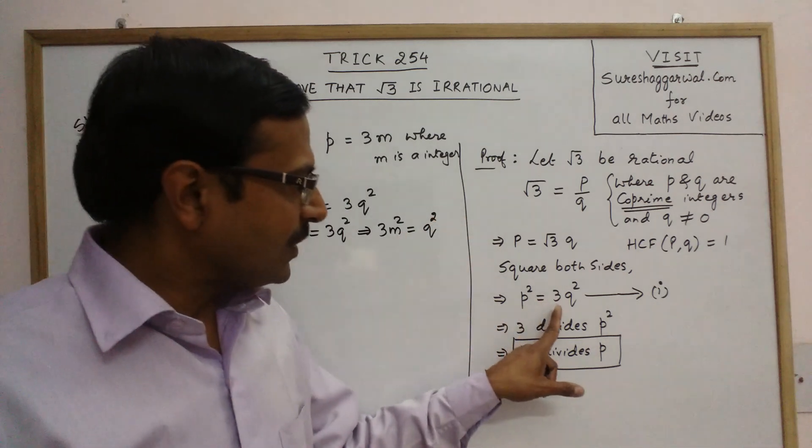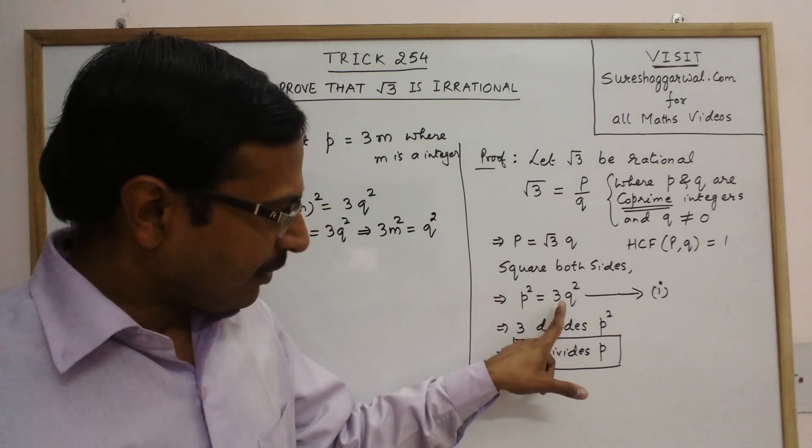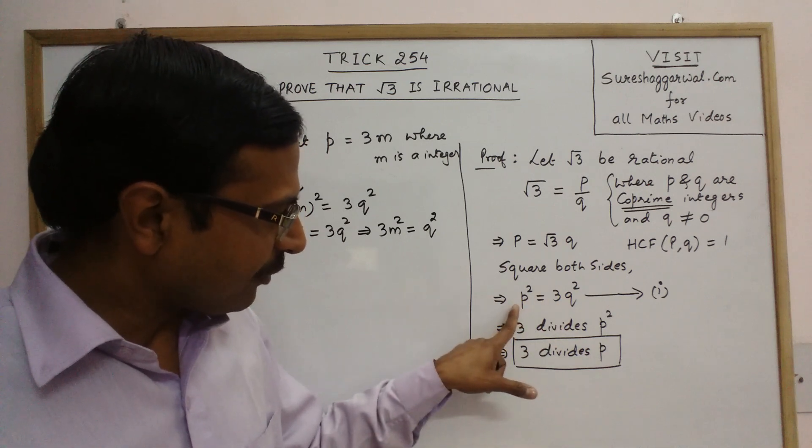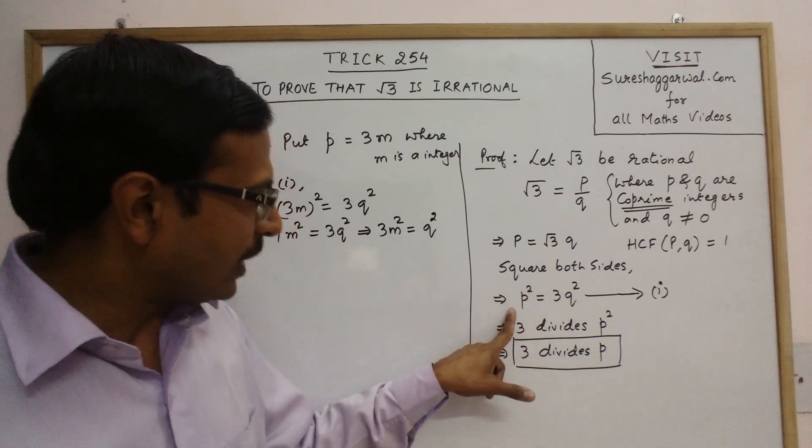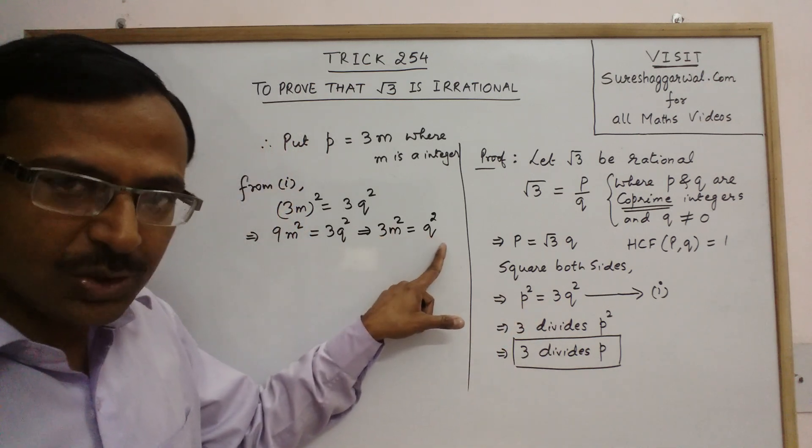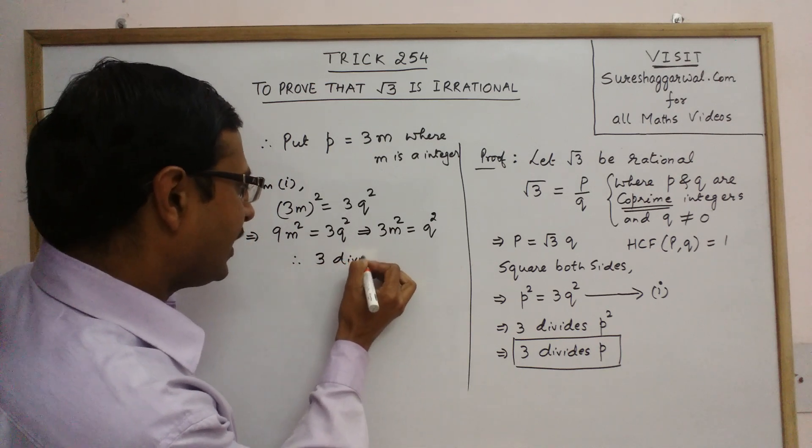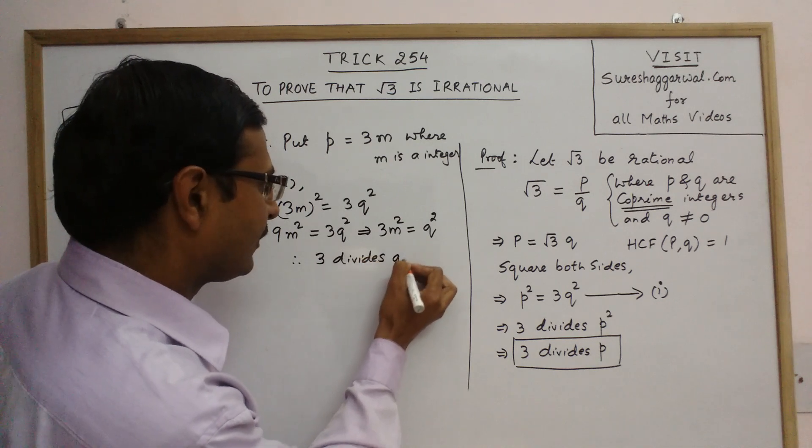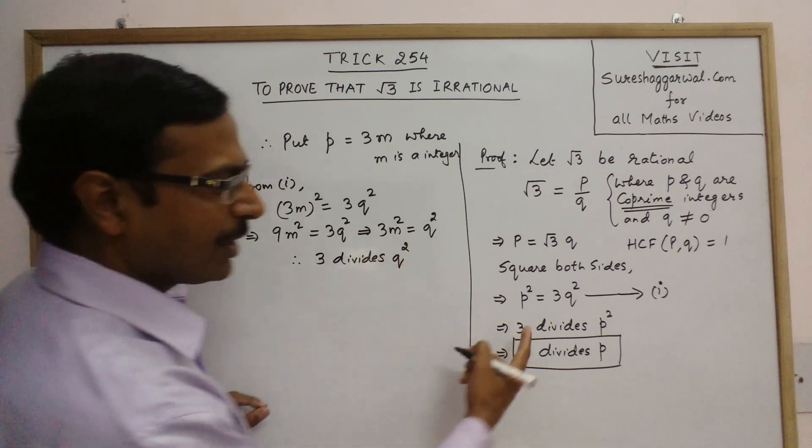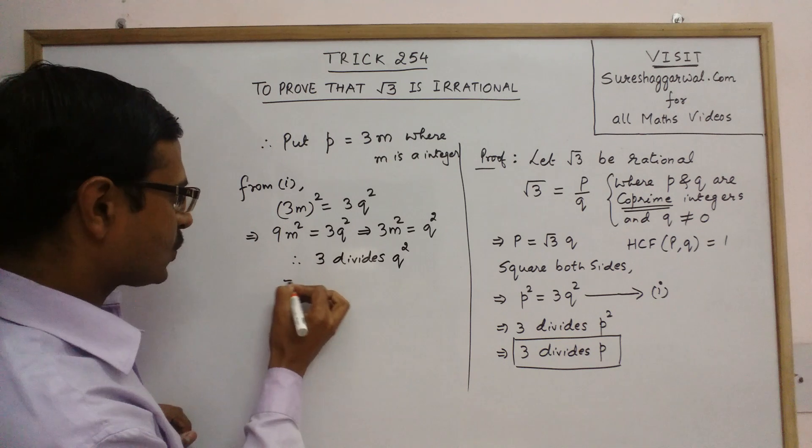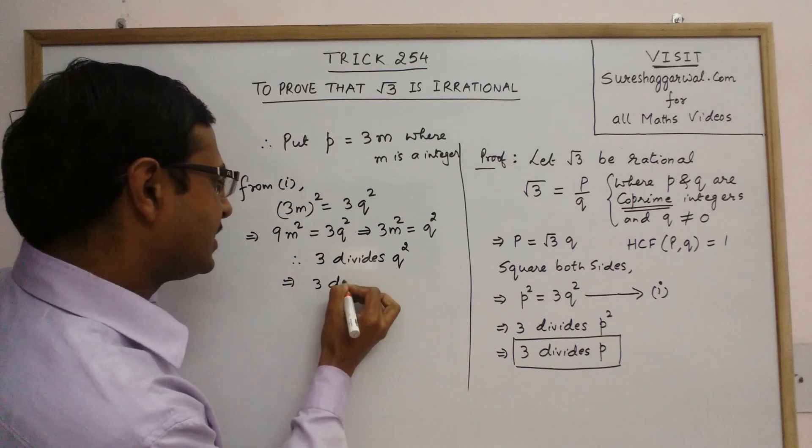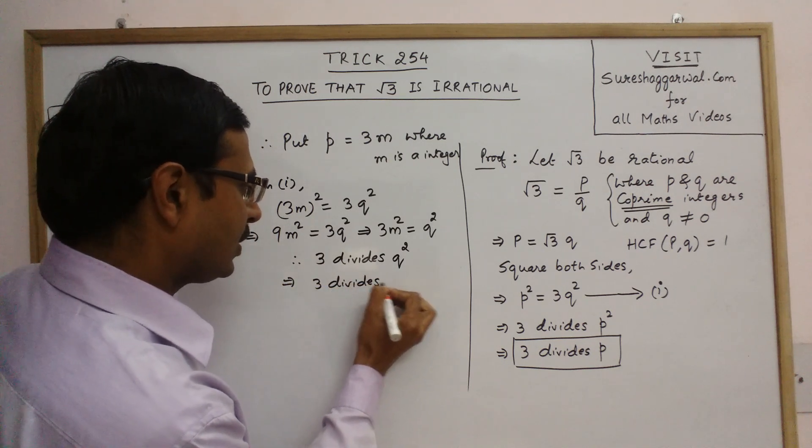Now see just as we got a 3 as a common factor here. So 3 was a factor of p square, 3 divided p square. Here 3 divides q square. Therefore, we have obtained that 3 divides q square. Now similar to this, if 3 divides q square, then 3 divides q.